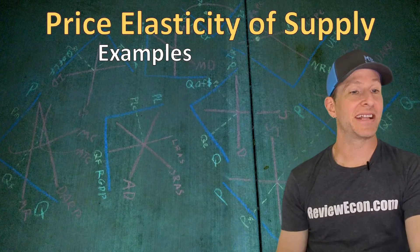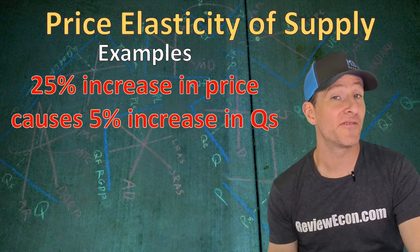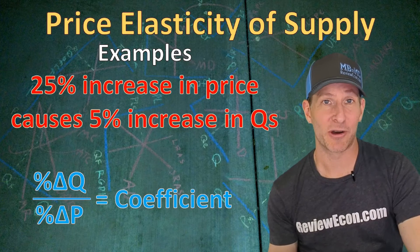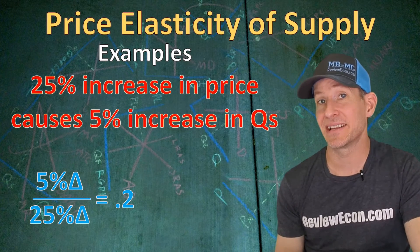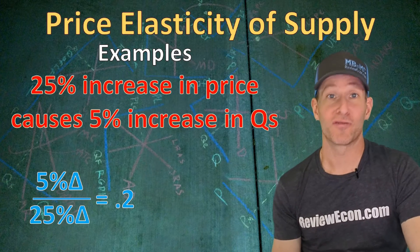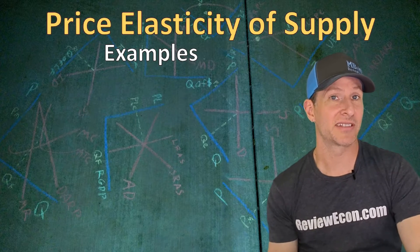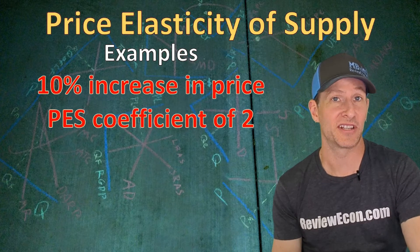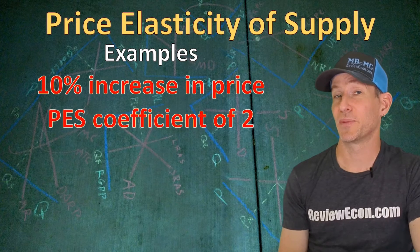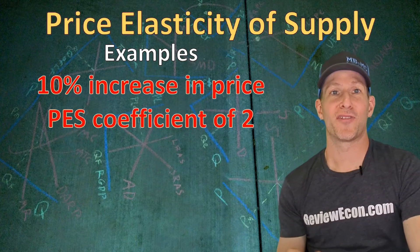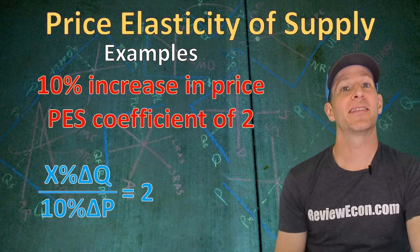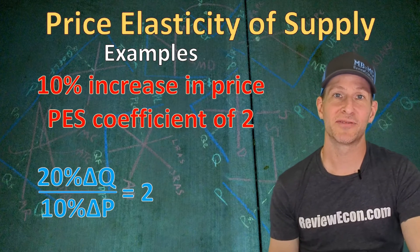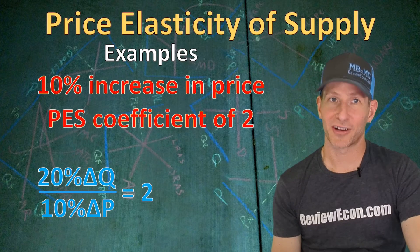Let's take a look at some examples. If a 25% increase in price causes a 5% increase in the quantity supplied, we take the percentage change of quantity divided by the percentage change of price. Plugging in the numbers gives us an elasticity coefficient of 0.2, so this supply curve is relatively inelastic through this price range. In another example, with a 10% increase in price and a price elasticity coefficient of 2, we use algebra: a 20% change in quantity divided by the 10% change in price gives us the coefficient of 2. Since the absolute value is greater than 1, this supply curve is relatively elastic.